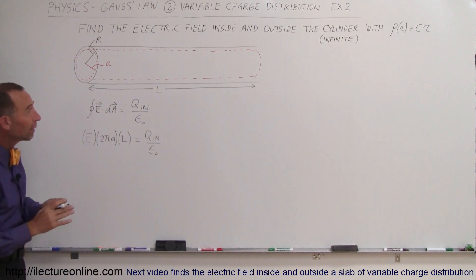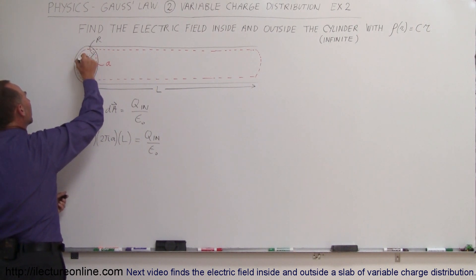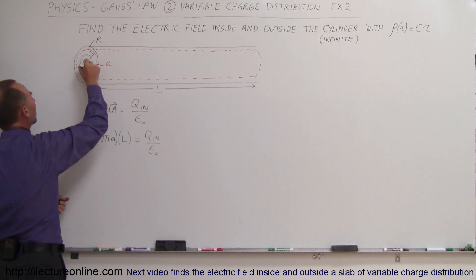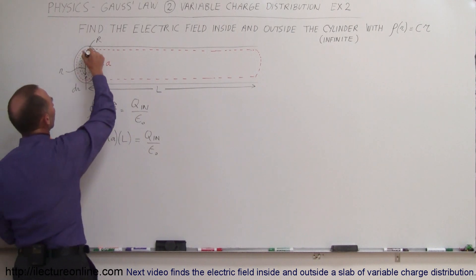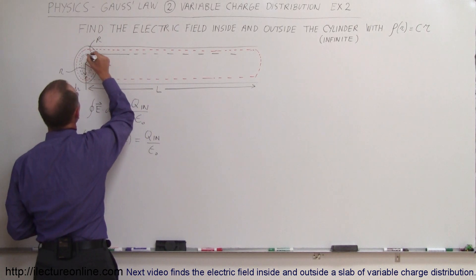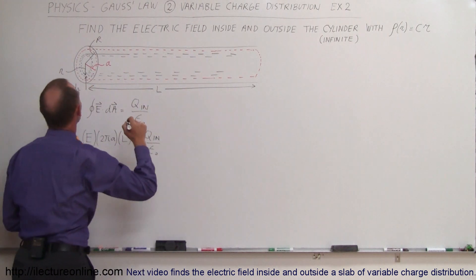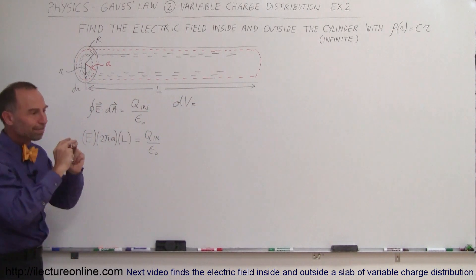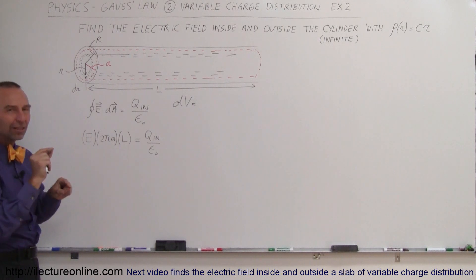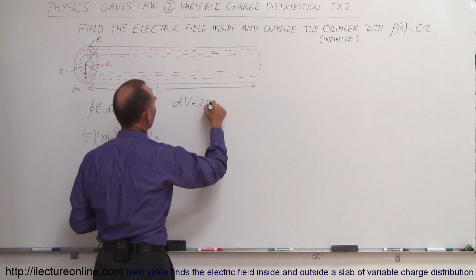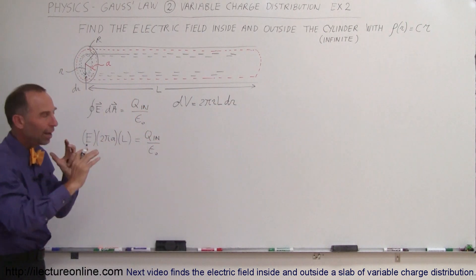To find Q inside we need to integrate because it's a non-uniform charge density. We need a small volume element: draw a little circle with a small thickness dr, where the distance out is r and the thickness is dr, going all the way around. So the volume element dV equals the area of a thin pipe times its thickness — the circumference 2πr times the length L times the thickness dr. That gives the volume of that thin cylindrical shell inside the Gaussian surface.